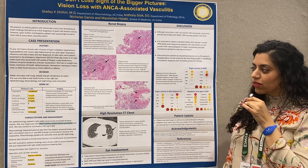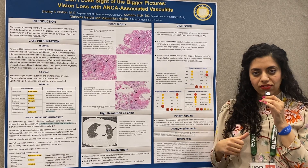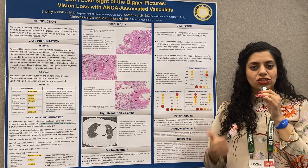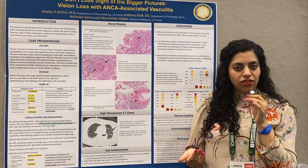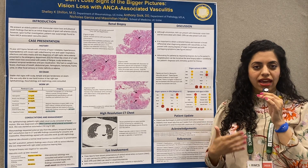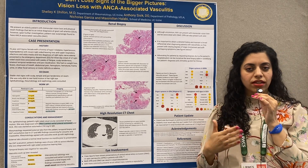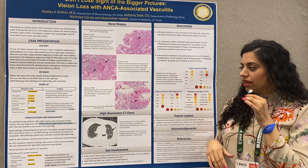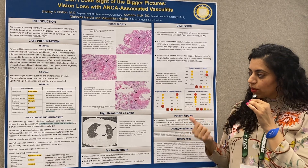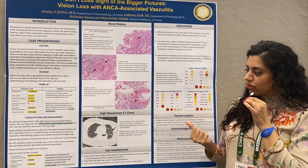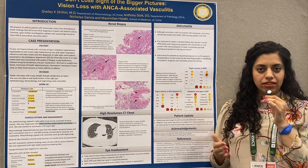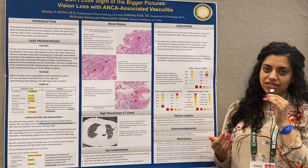She was also noted to have a creatinine of 4.7 with a GFR of 9. Ophthalmology, Nephrology, and Rheumatology were consulted. Ophthalmology noted she only had hand motion of the right eye on exam, and she was diagnosed with central retinal arterial occlusion. She was also diagnosed with GCA and started on high-dose steroids.